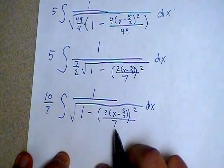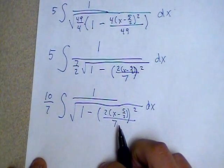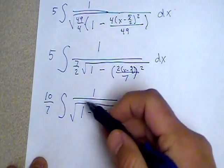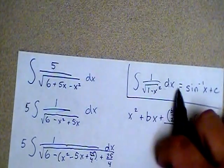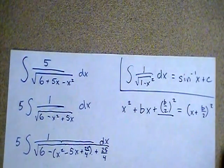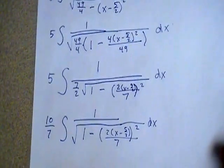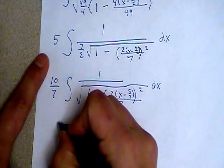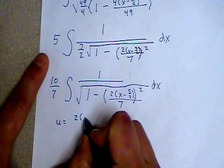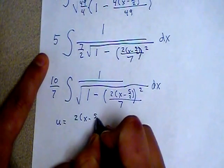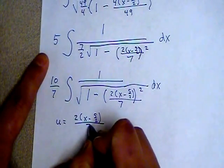If I let u equal what's inside this set of grouping symbols, I'm then going to have 1 over the square root of 1 minus u squared, and I'll be able to use the formula that we wrote down a long time ago at the top of the page to actually evaluate the integral. So we'll do the substitution at this point. So u is going to be equal to 2 times the quantity x minus 5 halves over 7.